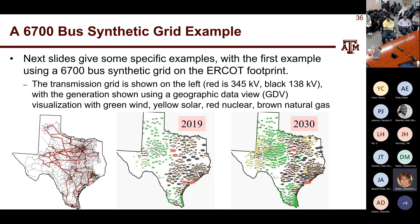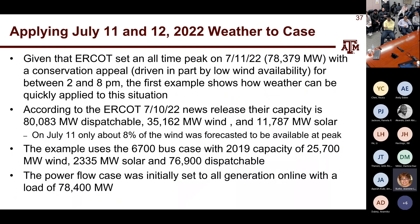We can then play different conditions. Our synthetic grids might have current or anticipated generation — green is wind, yellow is solar, black is coal, brown natural gas, red nuclear. We can also play 2030 conditions with a lot more wind and solar. We can run all these scenarios and tell people: what's the likelihood of a given weather situation occurring? That analysis became relevant in Texas in July of last year.